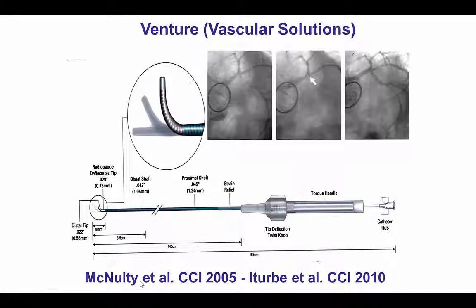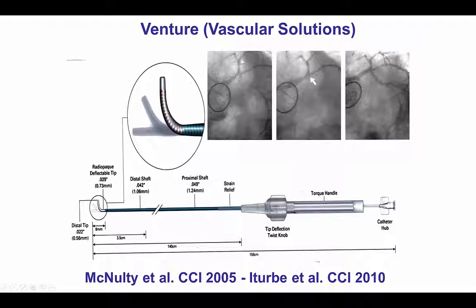Ostial circumflex CTOs can be challenging in large part because of the significant tortuosity. Such vessels can originate at 90 or even more than 90 degree angles, as was the example in this case, and the problem is when wires are attempted to be advanced through these significant bends, they tend to prolapse into the LAD or the aorta.